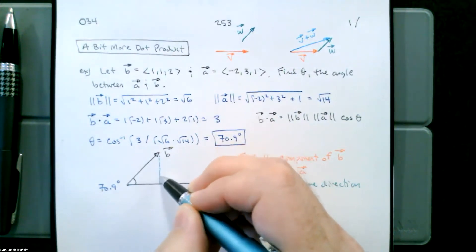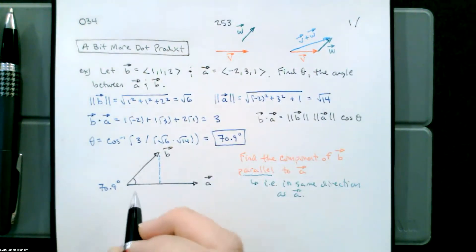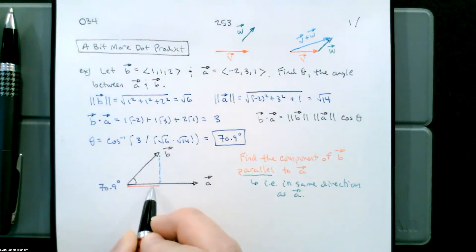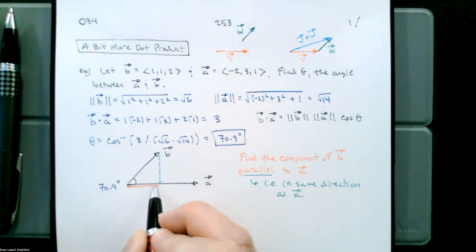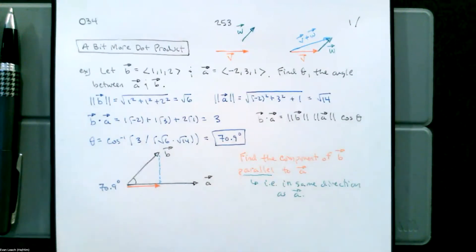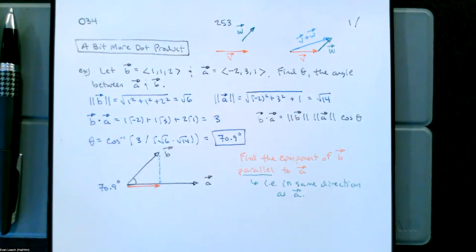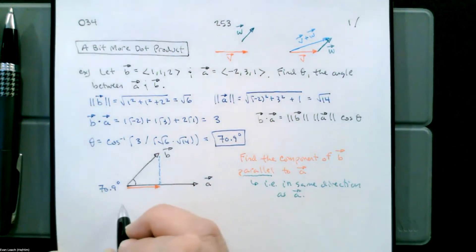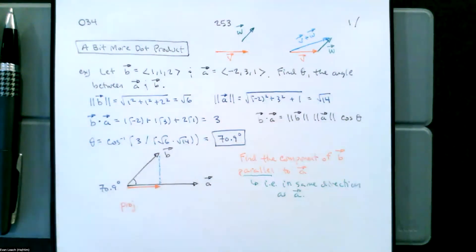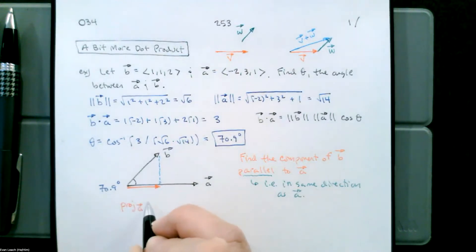That's going to be the component of B parallel to A. We're going to say that this is the projection of B onto A, written as projection subscript A of B.